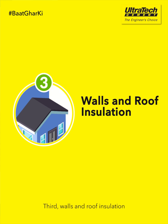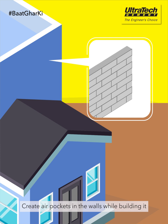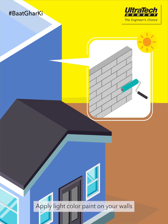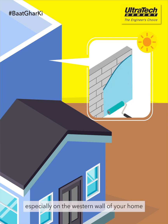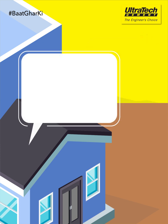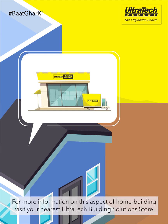Third, walls and roof insulation. Create air pockets in the walls while building, or use AAC blocks as a building material, which will provide insulation from harsh sunlight. Apply light-colored paint on your walls, especially on the western wall, which will resist heat from the sun. Use china mosaic, light-painted, or clay tiles on the roof slab. For more information on this aspect of home building, visit your nearest Ultratech building solution store.